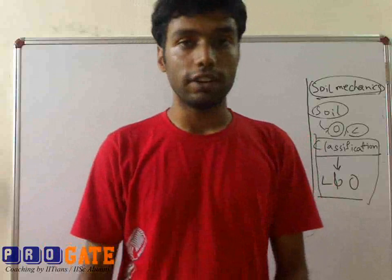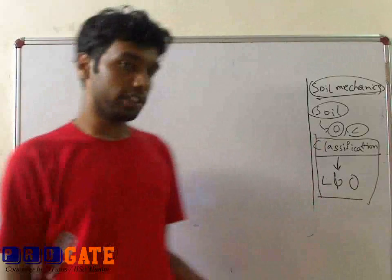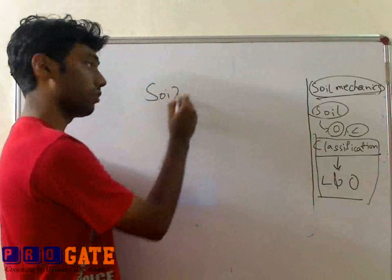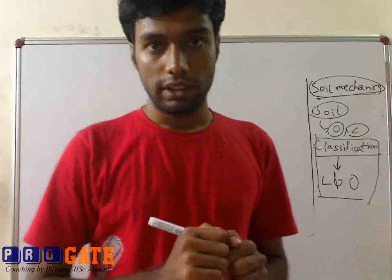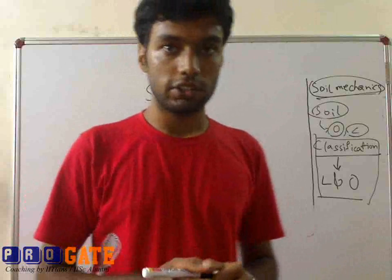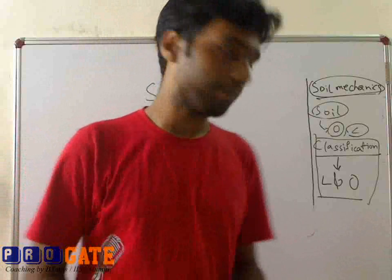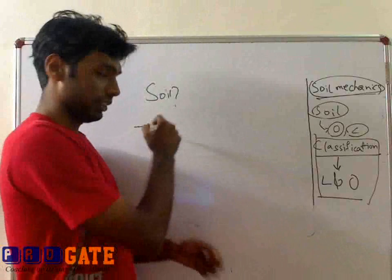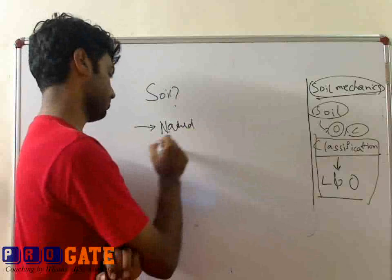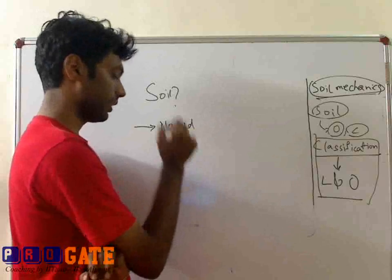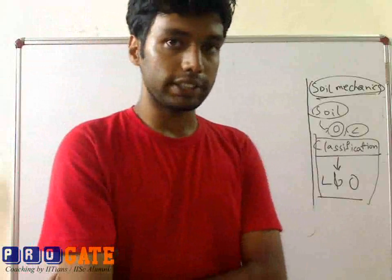So when I say soil, we have to think about the definition of soil. Soil can mean different things to different people. Like for an agriculturist, soil is the thing where he grows his crops. So what exactly is soil to an engineer? Soil to an engineer is a naturally occurring material — an agglomerate of inorganic and organic materials on which construction can be made.